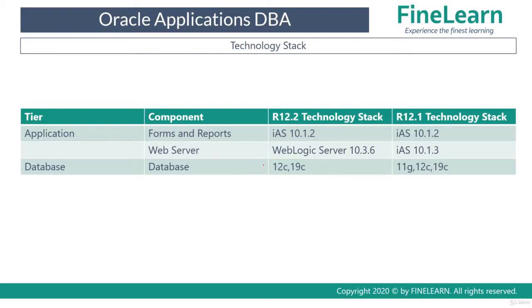First let's see in the application tier what are the Technology Stack products or components. Forms and Reports is one of the very important components of Oracle E-Business Suite, and the Technology Stack product used for that is Internet Application Server version 10.1.2, which is also used in Release 12.2 as well. For the Web Server, we use WebLogic Server in Release 12.2, whereas in Release 12.1 we use Internet Application Server version 10.1.3.